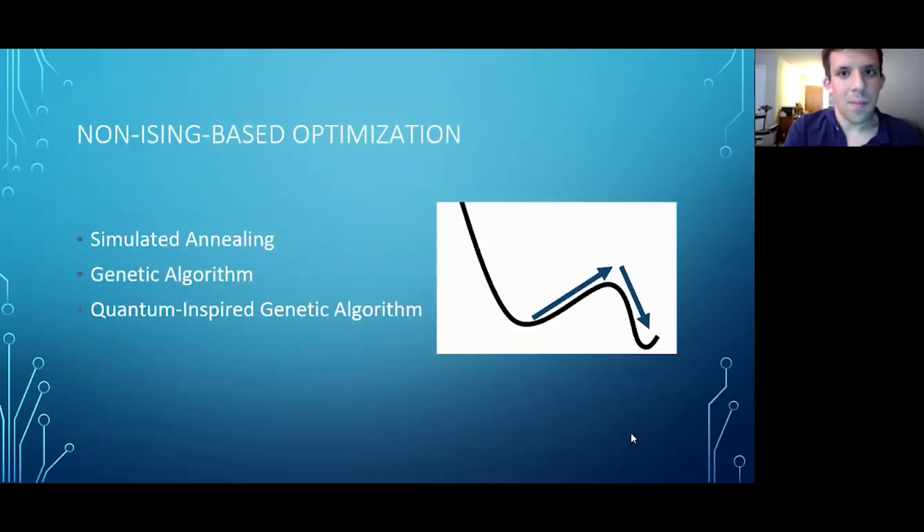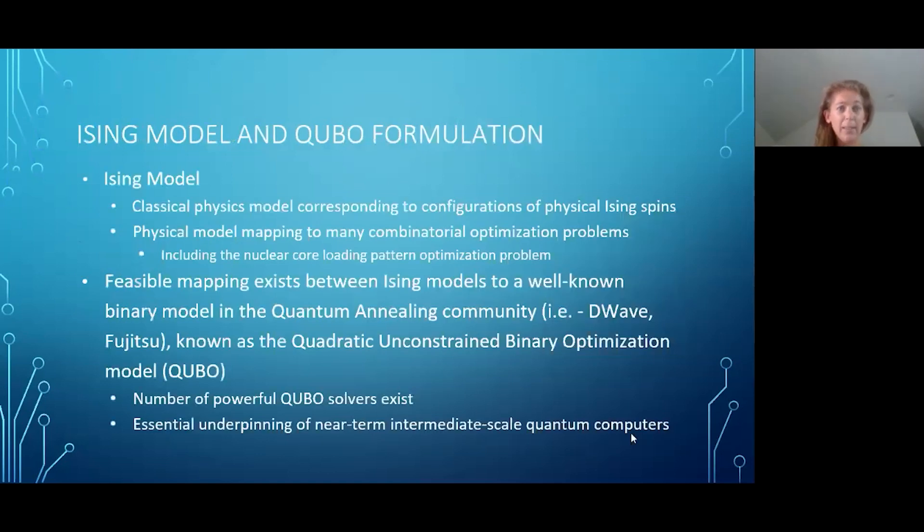We considered a few non-Ising-based optimization methods, including simulated annealing, which heats and cools a solution, genetic algorithms and quantum-inspired genetic algorithms, which take a chromosome view of evolving solutions into an optimum configuration, as well as Ising-based models.